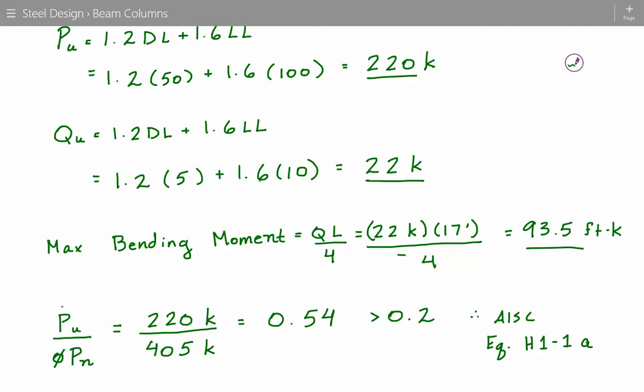And the axial compressive strength that we found from the table in the manual was 405 kips. So 220 divided by 405 gives us 0.54, and that's greater than 0.2. So that means we're going to use equation H1-1A in the AISC specification, chapter H.